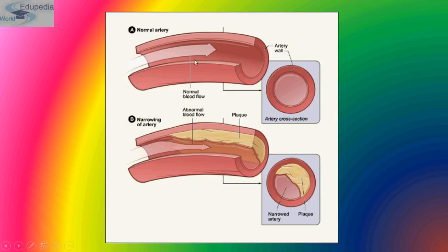In a normal artery, blood flows freely through the full lumen. When plaque has deposited inside the arterial lumen, the artery narrows and blood flow is reduced. The cross-section of a CAD artery shows deposited plaque that has decreased the arterial lumen and reduced blood flow to the heart.